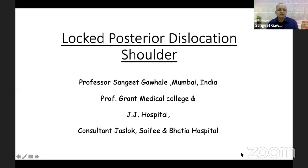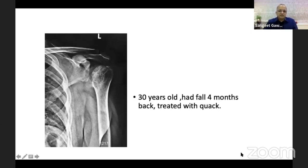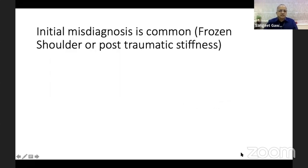My talk is on locked posterior dislocation of the shoulder. Coming to the case: a 30-year-old had a fall four months back and as expected in the interior of India, he was treated by a quack. The X-ray was taken and as usual it was missed. Initial misdiagnosis is very common because in a posterior dislocation the X-ray looks normal to some busy surgeons, and if you don't focus on it, it is often misdiagnosed as frozen shoulder or post-traumatic stiffness.